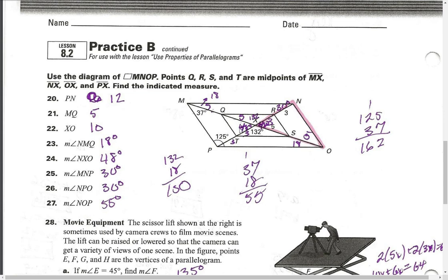This angle is 48. MNP is 30, and so is NPO, also 30 here, because they're alternate interior. Then NLP is 55 because 37 plus 18, opposite angles are equal.